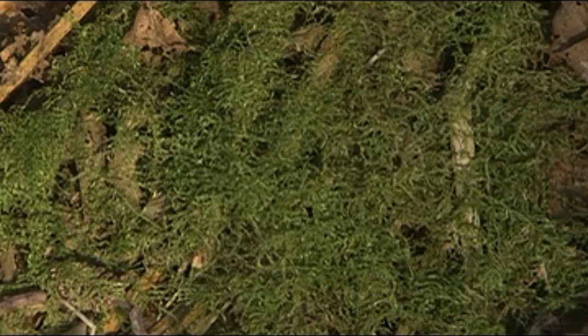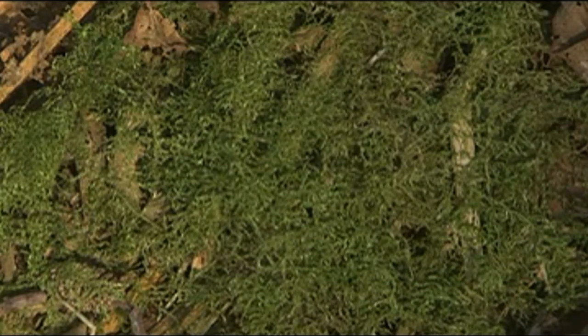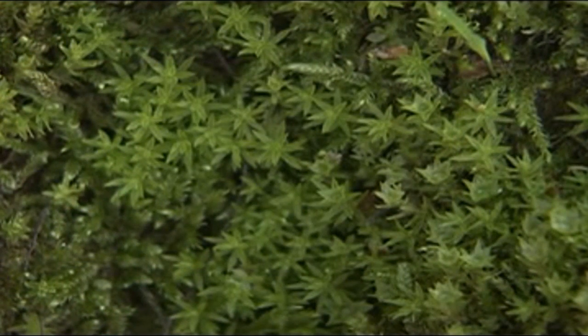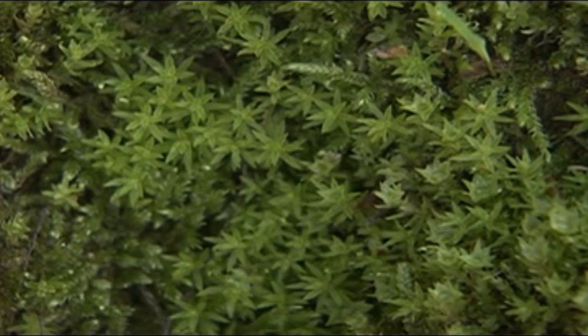Moss protonema looks remarkably like filamentous green algae, suggesting in part an evolutionary link between mosses and green algae. As protonema grows, it forms rhizoids that attach to the ground and shoots that grow upward into gametophyte plants that continue the life cycle.